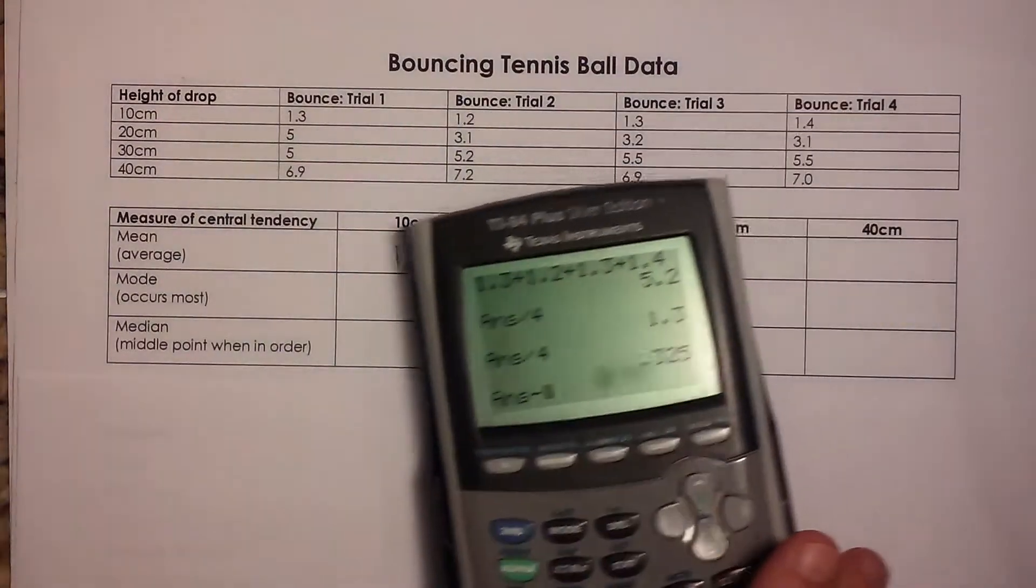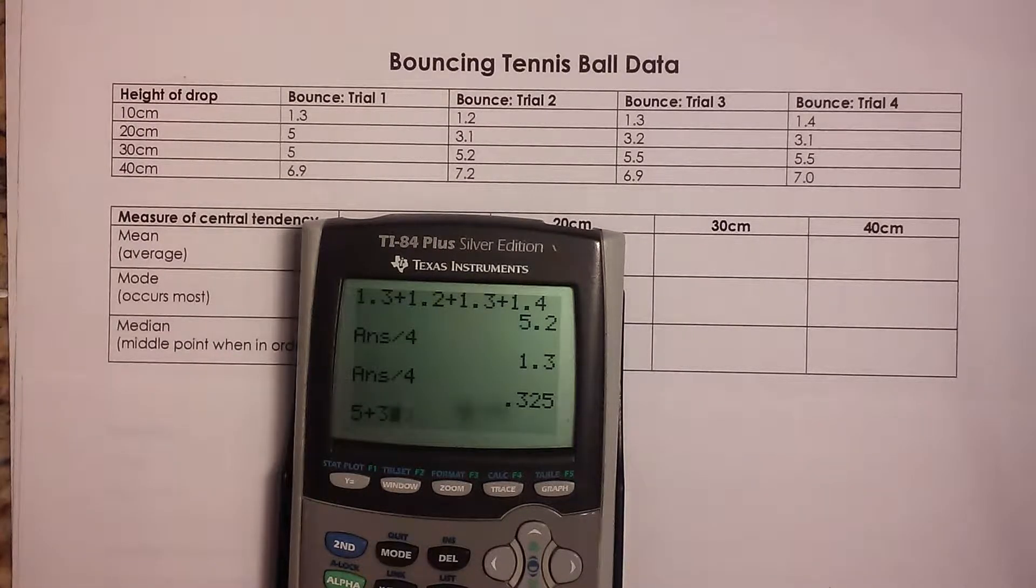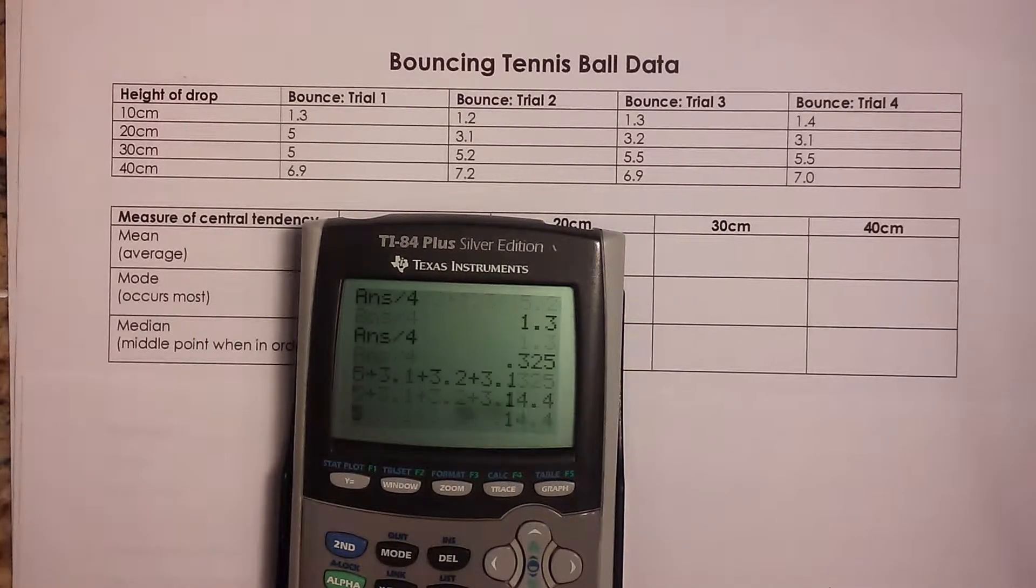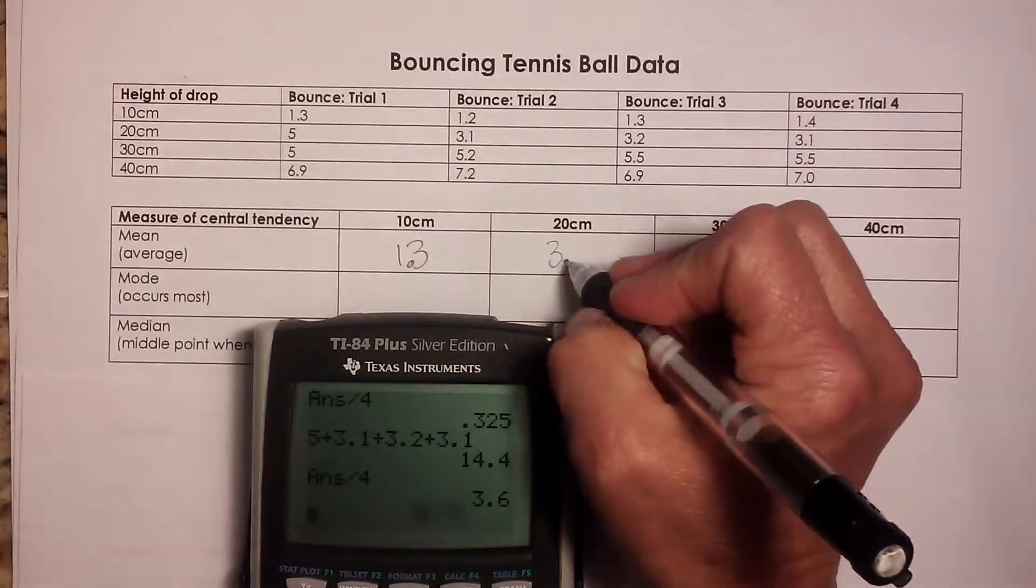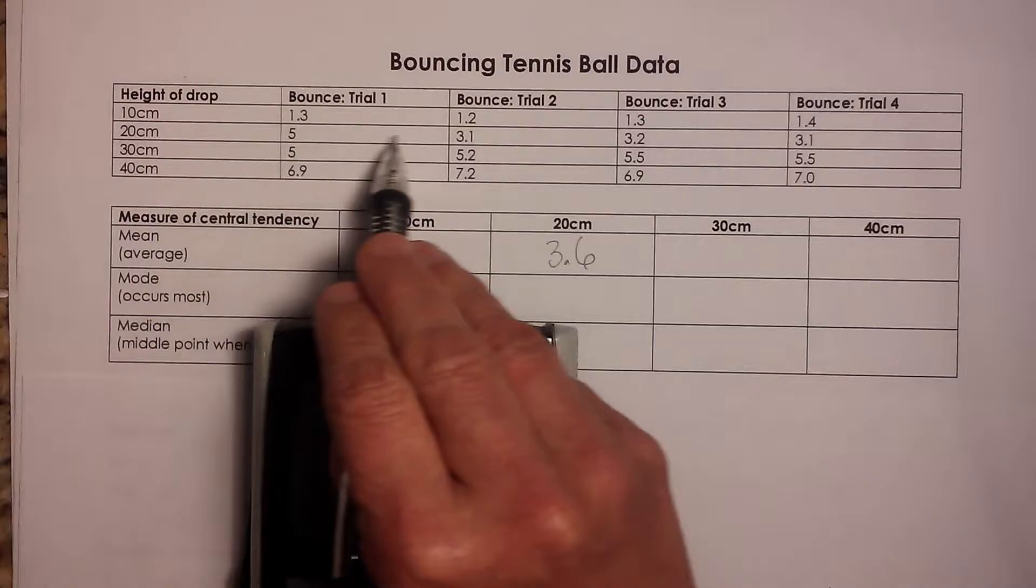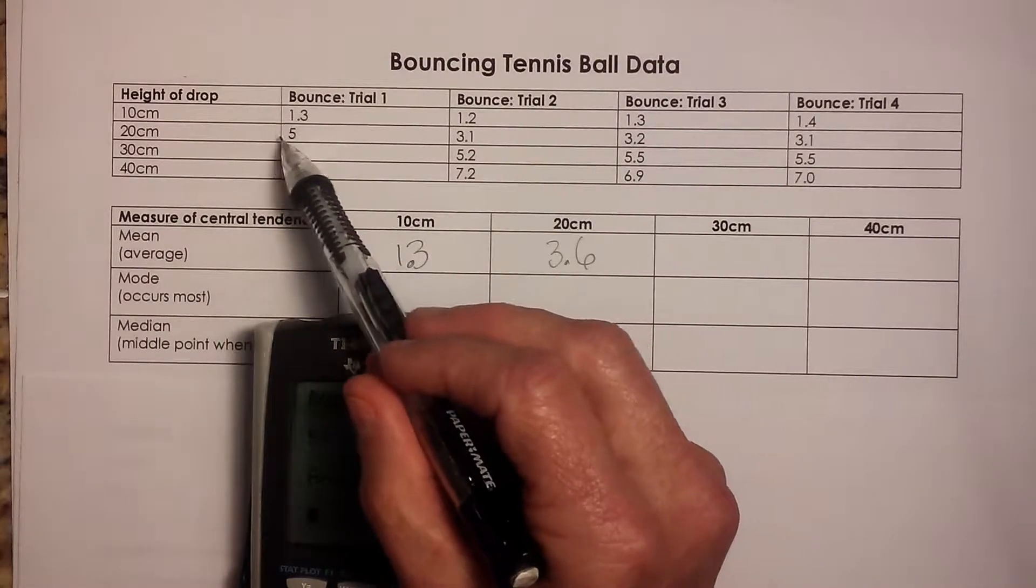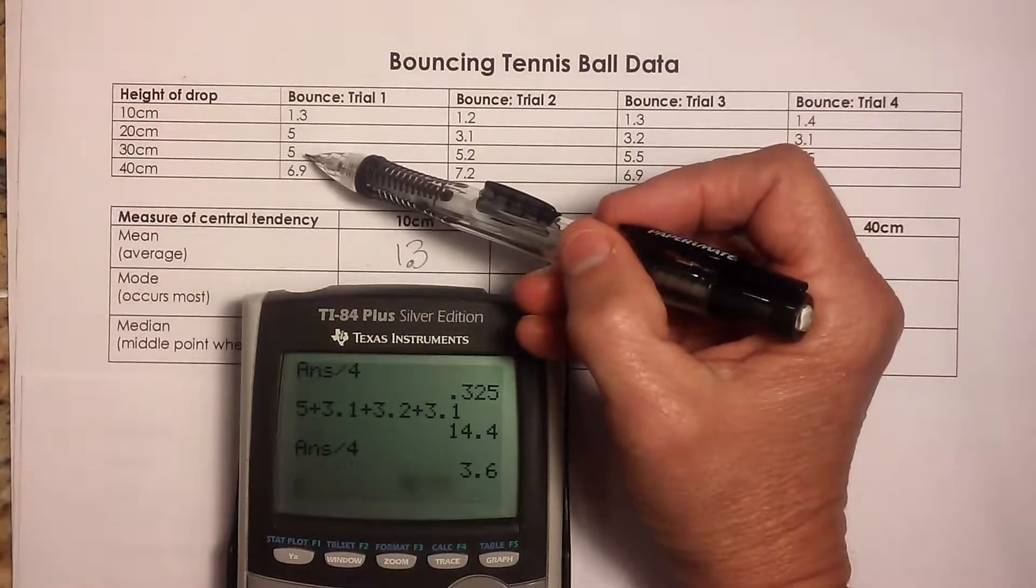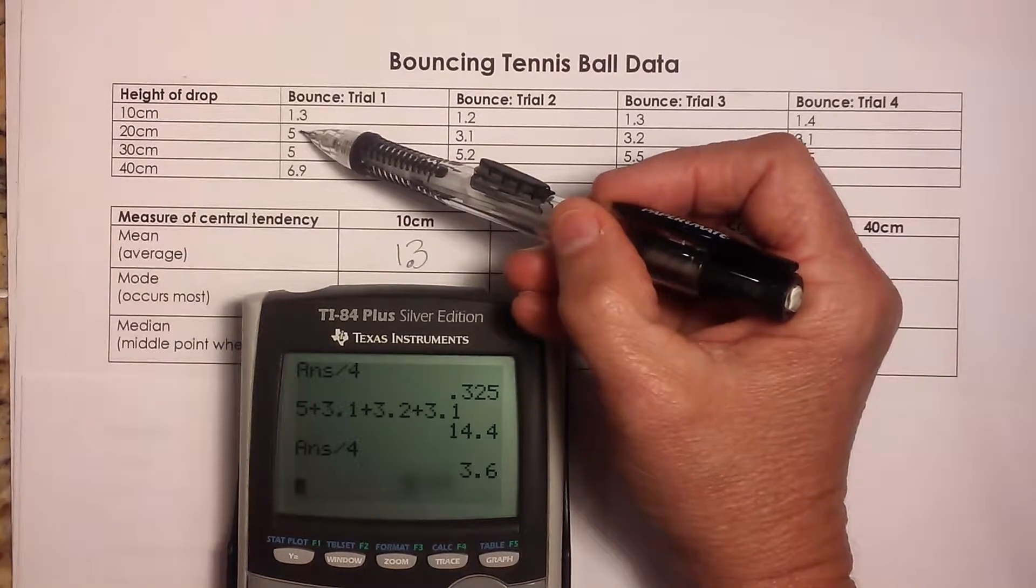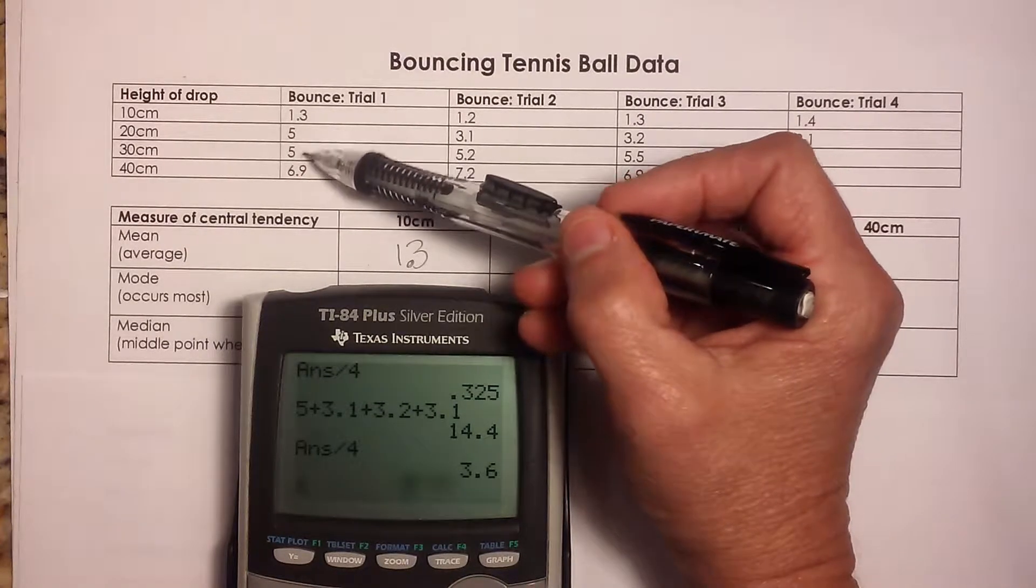And then I'm going to repeat the same process for 20 centimeters. So I've got 5 was the first bounce, 5 centimeters. My second bounce was 3.1, my third bounce was 3.2, and my last bounce was 3.1. So to get that average, I'll divide 14.4 by four and I get 3.6. So that is my average. Now I want you to look at that data for a second. Do you notice anything odd? This first trial looks a little bit high. So that one may have been an error from during the actual experiment because it's actually the same height from 30. So maybe whoever dropped the ball might have dropped it from 30 instead of 20. So those are the types of things you need to look at an experiment and maybe redo a trial.